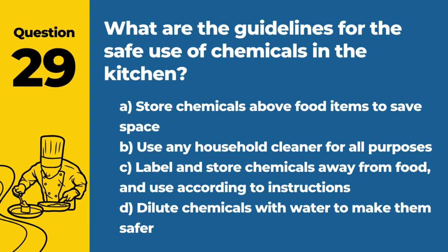Question 29. What are the guidelines for the safe use of chemicals in the kitchen? Answer: C. Label and store chemicals away from food and use according to instructions. Proper chemical storage and use prevent accidental food contamination.